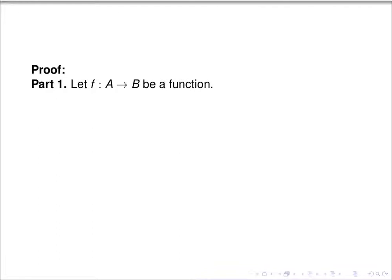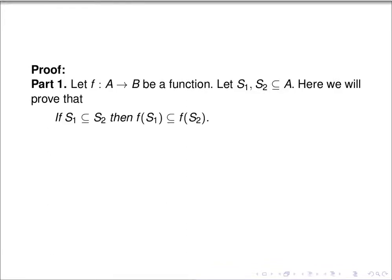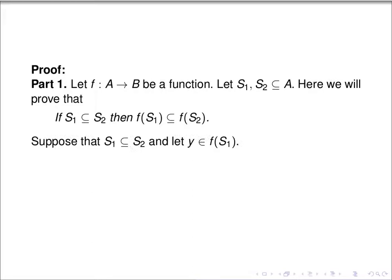Here's the proof, part one. Suppose f is a function from A to B, and suppose S1 and S2 are subsets of A. We're going to prove that if S1 is a subset of S2, then the image of S1 is a subset of the image of S2. So suppose S1 is a subset of S2, and let y be an element of the image of S1. Since y is in the image of S1, there exists some x in S1 so that y is equal to f of x.